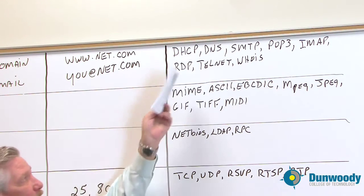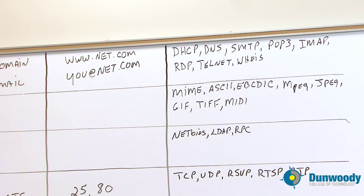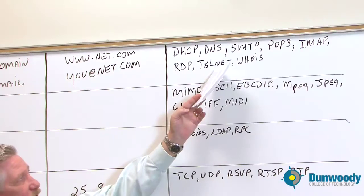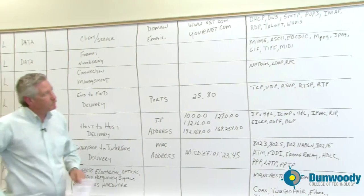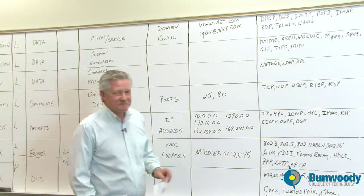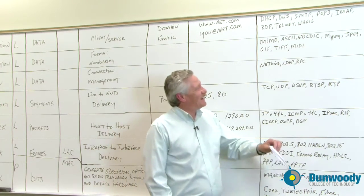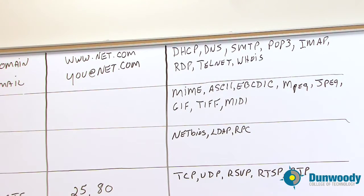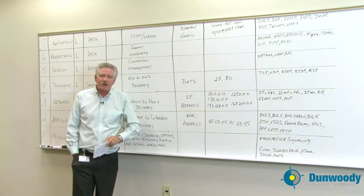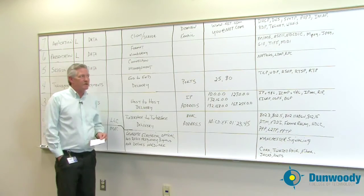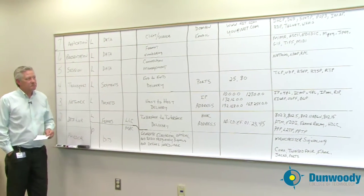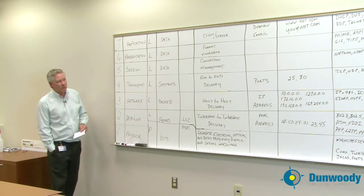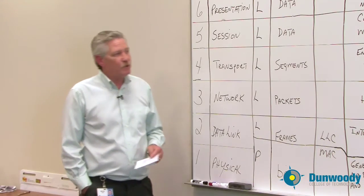I also want to mention RDP, Remote Desktop Protocol — that's the one we discussed at the session layer. Telnet is an old and useful program for getting into systems; if you take a security class, you'll learn how to use it. Then there's WHOIS — if you need to find out who owns a domain and what their associated IP addresses are, you can use WHOIS. It's built into operating systems like Unix, but for Windows you have to download the program.